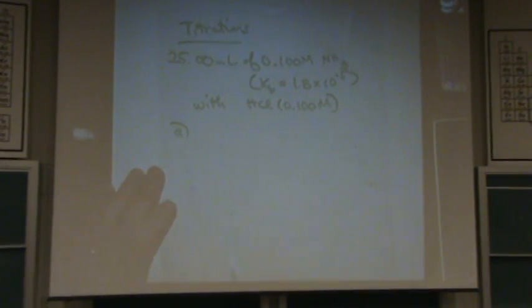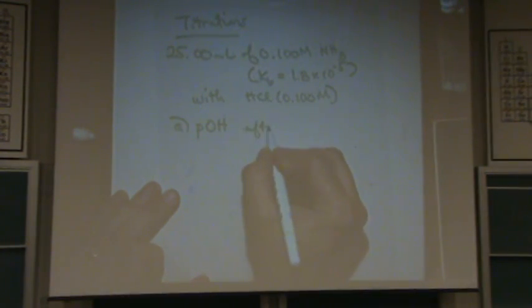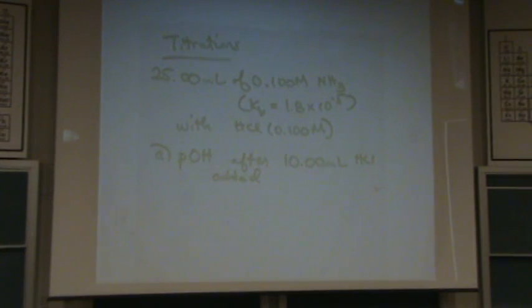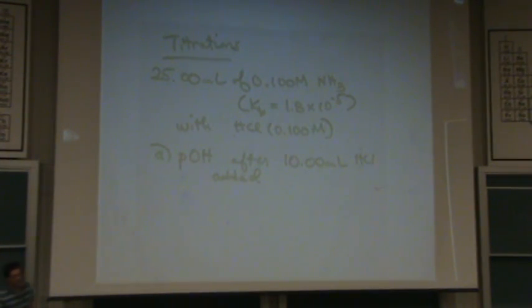So the first part, part A. What I do, before I even tell you, I'll write it down first. I want to know, I went crazy on you here. POH after 10 milliliters of HCl is added. Usually we ask you for the pH. That is POH. First, before I even start, I'd like to know what type of titration this is. So NH3 is what kind of base? Weak base. What's this? Strong acid. So this is a weak base, strong acid titration. It matters. You'll see how it matters in just a little bit.